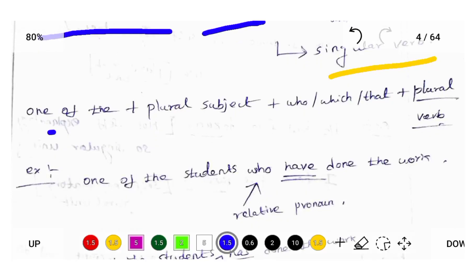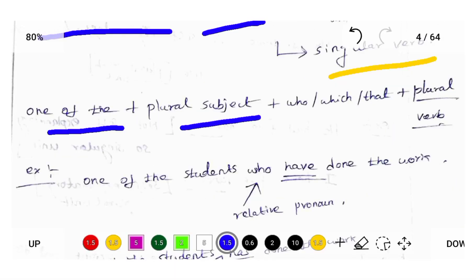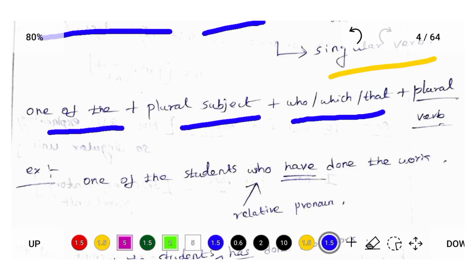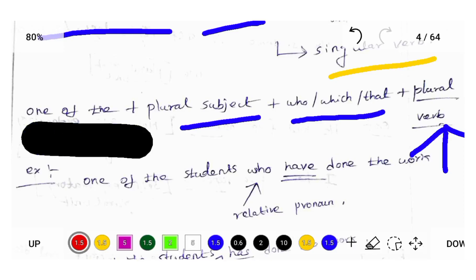Same as 'one of the' followed by plural subject, but here with relative pronouns — who, which, that. These all are relative pronouns. When these relative pronouns are present after the plural subject, then the verb should be in plural form. Whenever the relative pronoun is present after 'one of the', then the verb should be in the plural form.